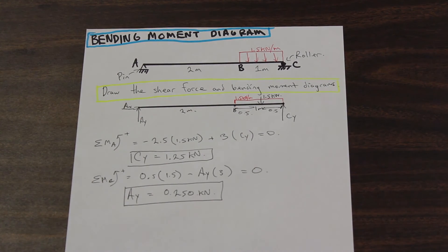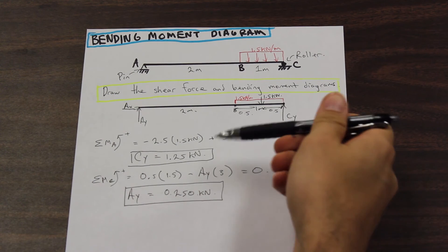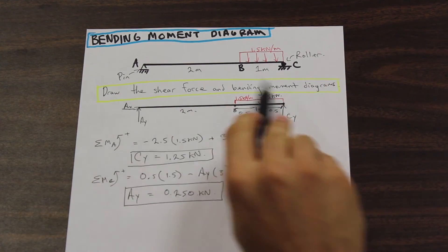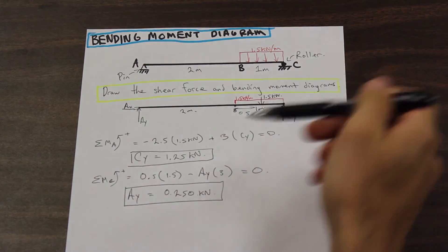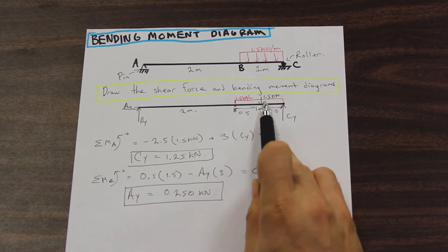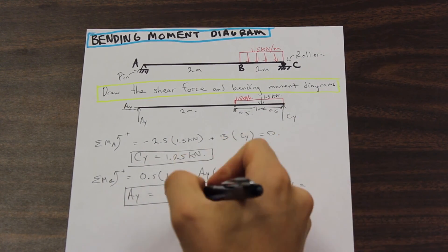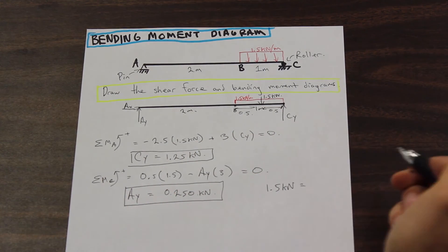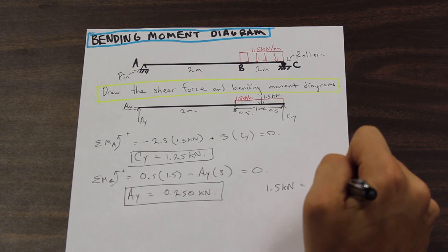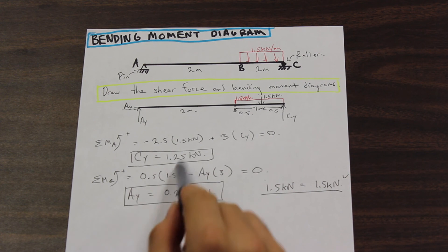Now, the check that I wanted to show you, and this is a little bit of a trick, and I highly suggest that you do this during your test, is that the summation of the reactions should equal the summation of the external forces acting on the beam. So we go to our free body diagram, and all we see for the external forces is this 1.5 kilonewtons. So this 1.5 kilonewton should equal the summation of these. So 1.25 plus 0.25 is equal to 1.5. And as we can see here, they are the same, which means that our reactions are correct. That's a good trick. Use it.